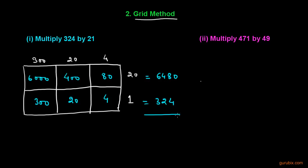Adding 320 and 4 gives 324. Adding all numbers together we get 4, 0, 8, 6. So this is the solution of the multiplication of 324 by 21.